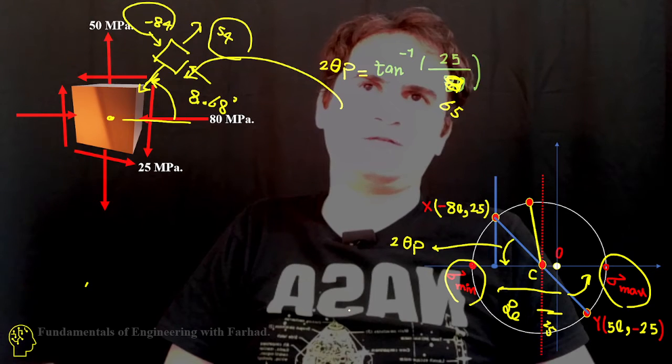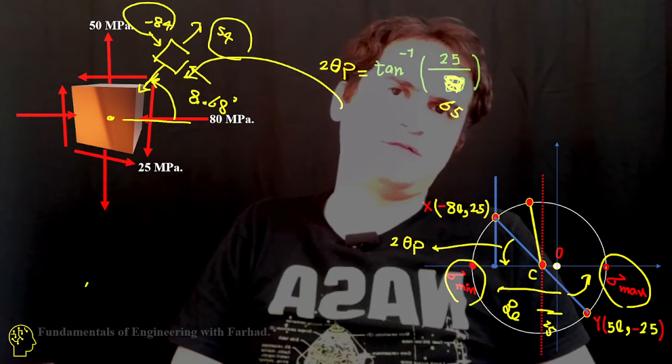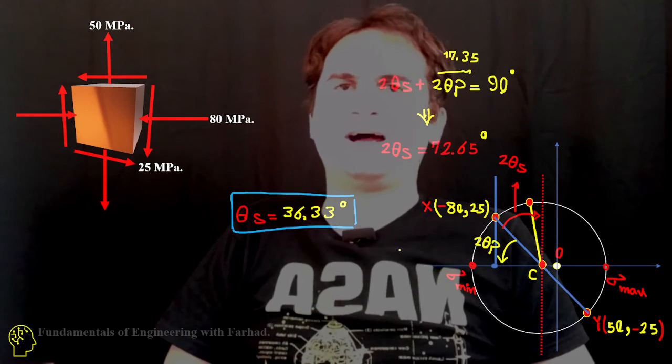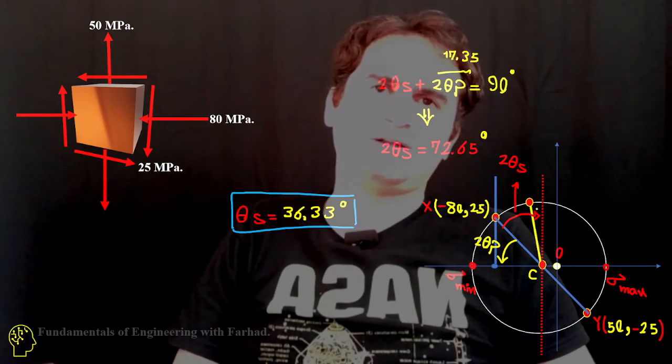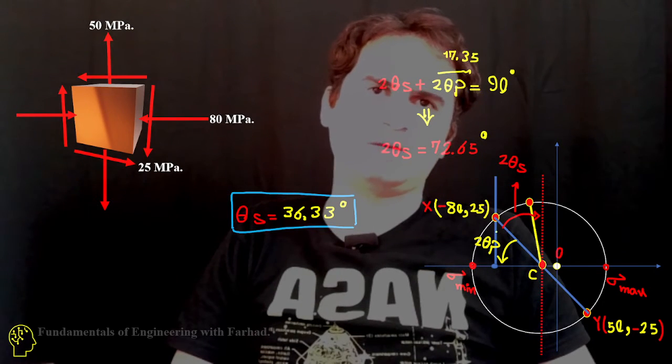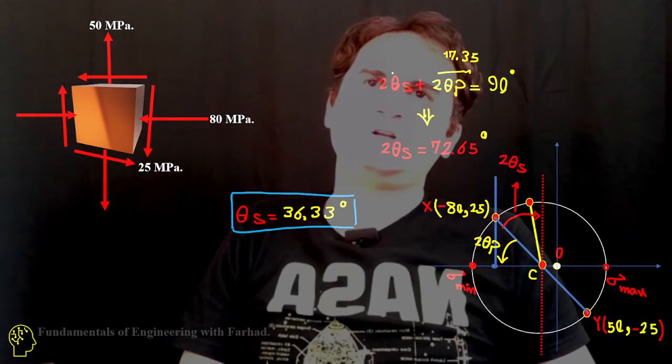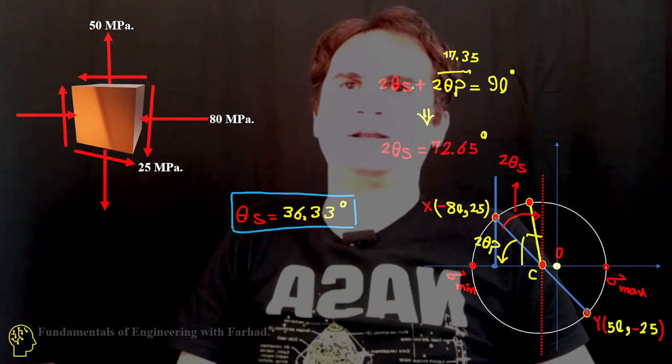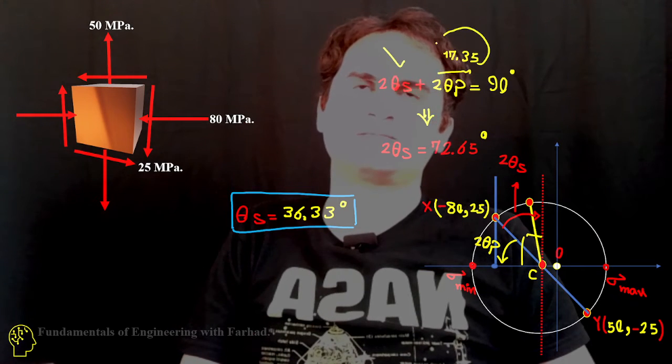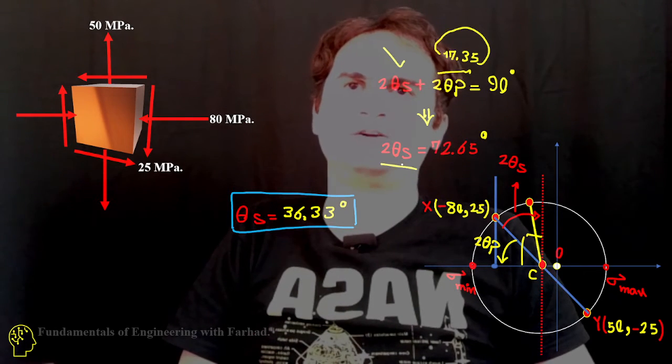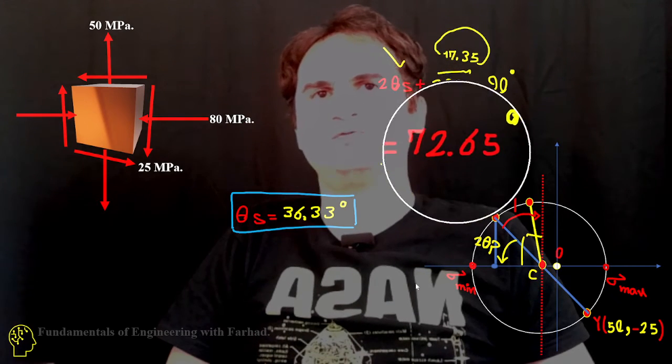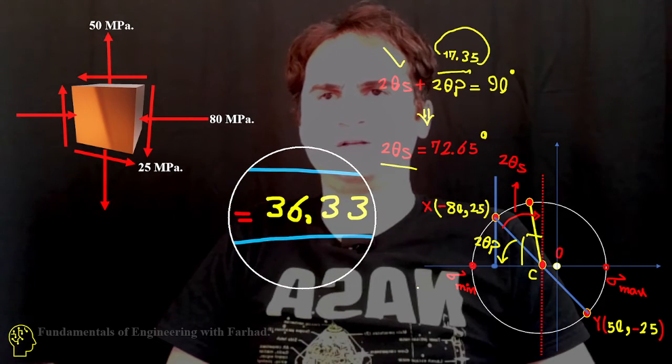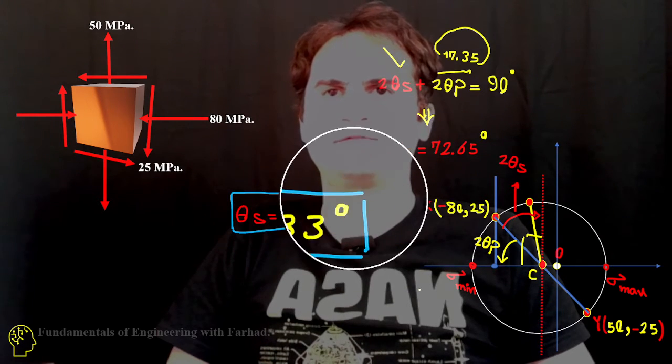If you just look at the nature of the angles, as soon as we have our theta p, we look to the other side from the sample. 2 theta s plus 2 theta p makes 90 degrees. If we already know what 2 theta p is, you can easily calculate 2 times theta s equals 72.65, and it gives us theta s for shear is equal to 36.33 degrees.